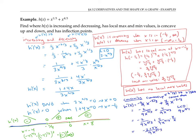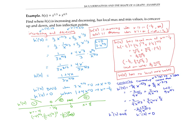To find where h double prime is positive and negative, I first find where it does not exist and where it equals zero. The second derivative doesn't exist where the denominator is zero — nine x to the five thirds equals zero — in other words, where x is zero. The second derivative is zero where its numerator is zero: negative two plus four x equals zero, which gives x equals one half. I'll put zero and one half on my number line — those are where h double prime does not exist and equals zero, respectively.